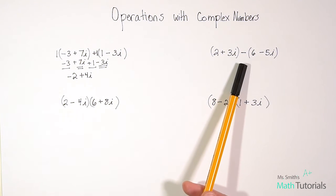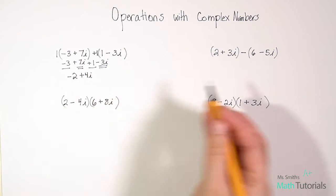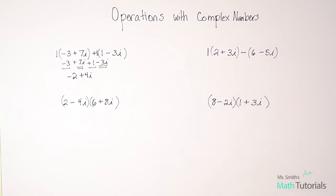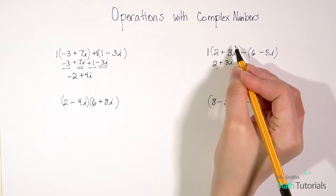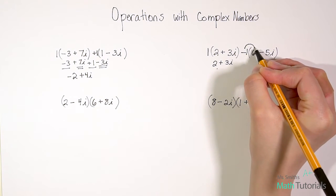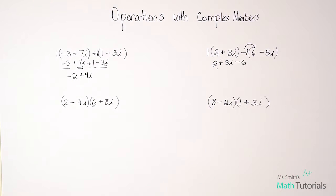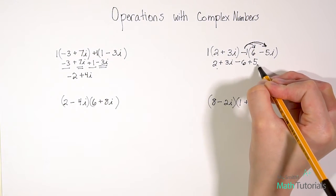Let's look at our second example — this one we're subtracting. Notice the subtraction symbol between our two binomials, so we have to be very careful. Out front of the first parentheses there's just a positive 1, so 2 plus 3i can be rewritten as is. But out front of the second parentheses it's actually a negative 1. When we have a negative 1 and distribute it in, it absolutely changes things. So negative 1 times 6 gives me negative 6, and negative 1 times negative 5i gives me positive 5i.